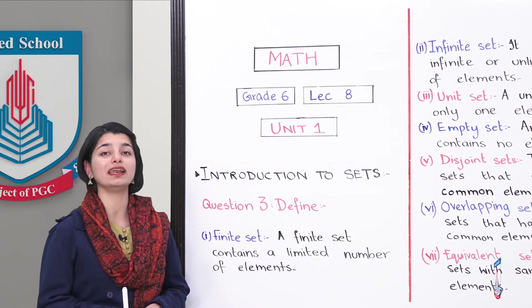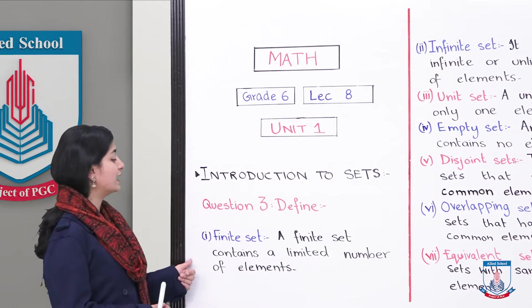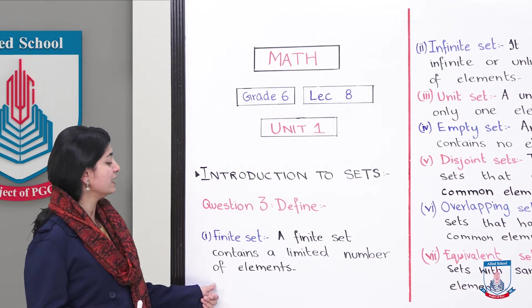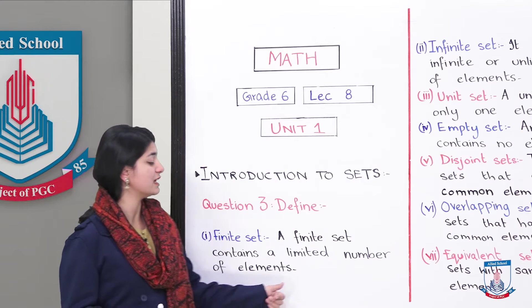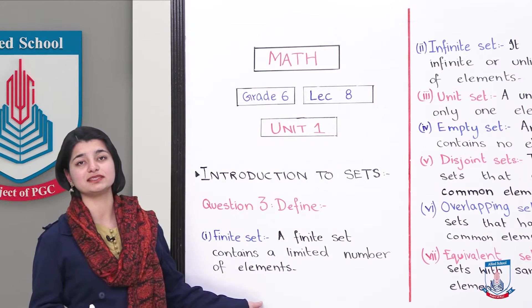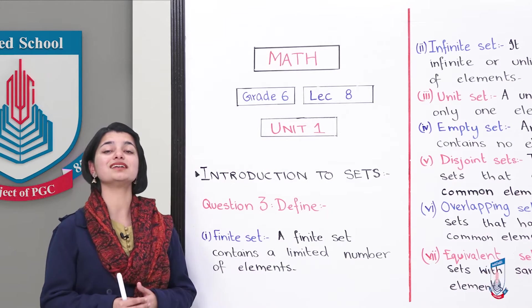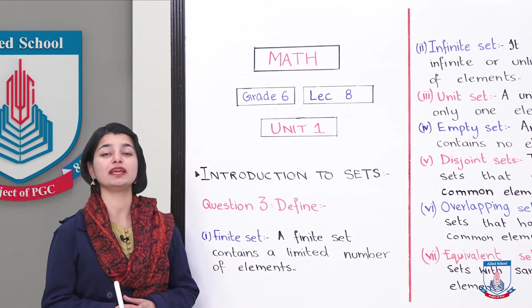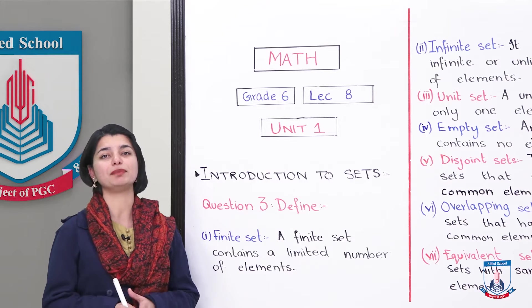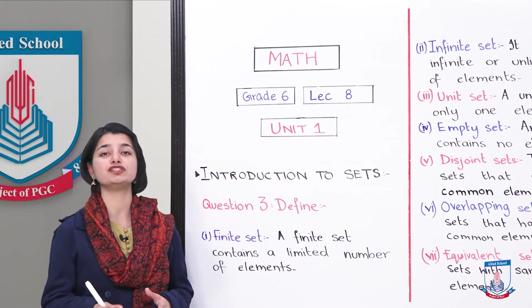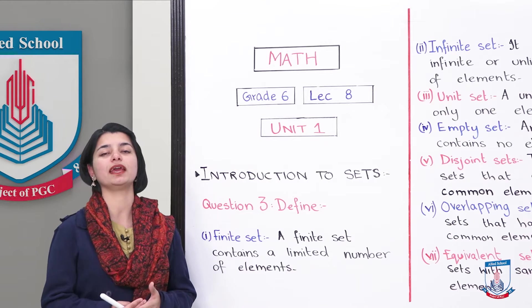The first definition is finite set. A finite set contains a limited number of elements. This is a very easy definition in this whole chapter — it is about finite and infinite sets.